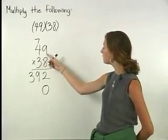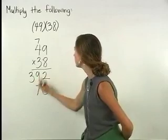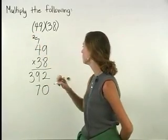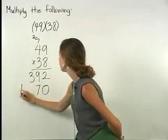3 times 9 is 27, so we write a 7 in the answer and carry the 2. 3 times 4 is 12, plus the 2 we carried is 14.